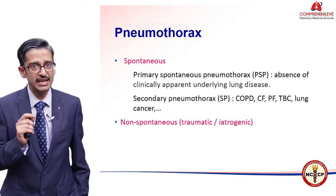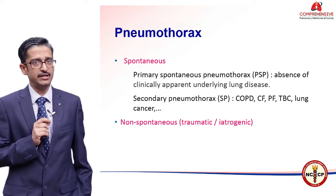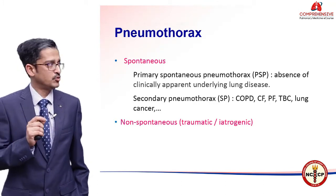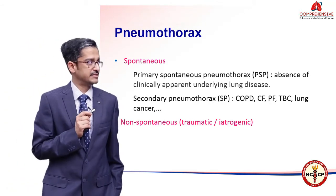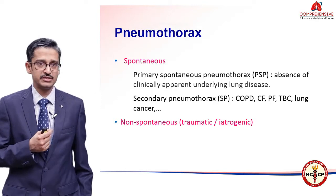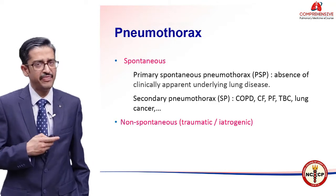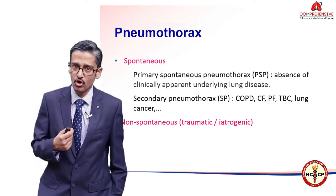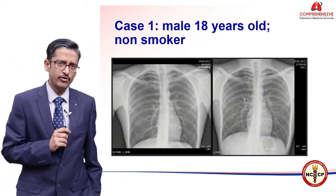When you think about primary spontaneous pneumothorax, I'm going to tell you something slightly different to what the long-standing ideas have been. Primary spontaneous pneumothorax conventionally is thought to be the absence of clinically apparent lung disease, over which you get a pneumothorax. Secondary pneumothorax is when there is underlying lung disease — COPD, cystic fibrosis, pulmonary fibrosis, lung cancer, and a wide variety of other lung diseases. Then conventionally you have a third variety, non-spontaneous pneumothorax, which is caused by trauma and can be iatrogenic.